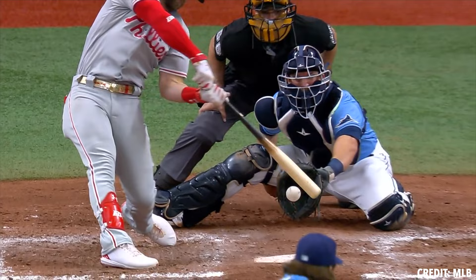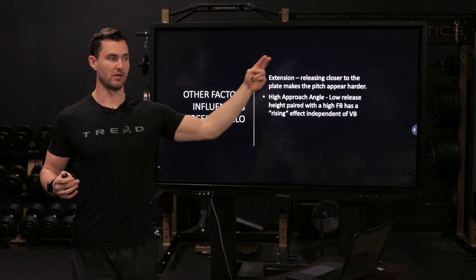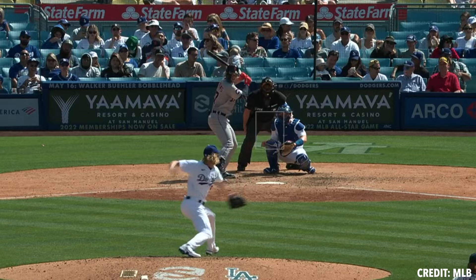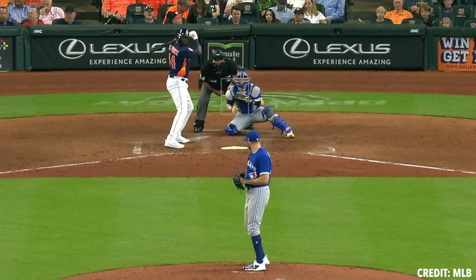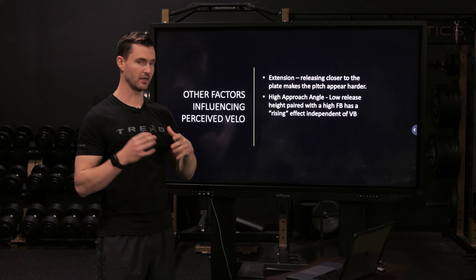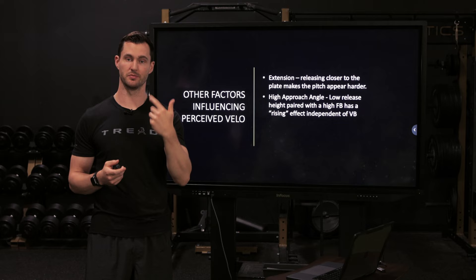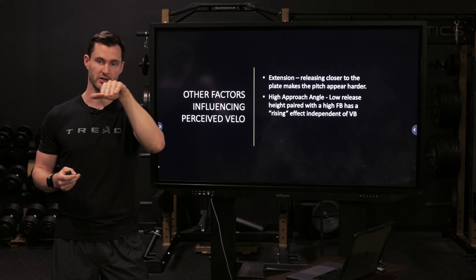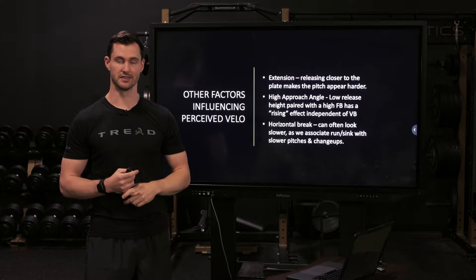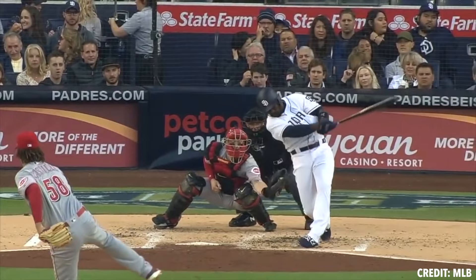A high approach angle — essentially how steep or flat of a plane that pitch keeps on its trajectory from release point to where it crosses home plate. A lower arm slot throwing up in the zone keeps a very flat plane; that's a high vertical approach angle. Someone with a really high release point throwing sinkers down in the zone keeps a steep plane — that's a low vertical approach angle. High vertical approach angle creates a rising effect independent of actual spin. Horizontal break: we associate arm-side run and sink with sinkers and changeups, which can make a pitch look slower.